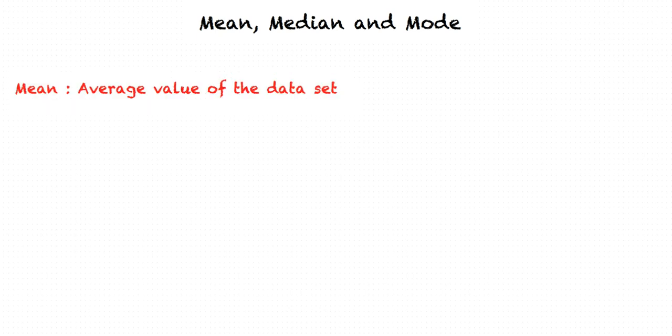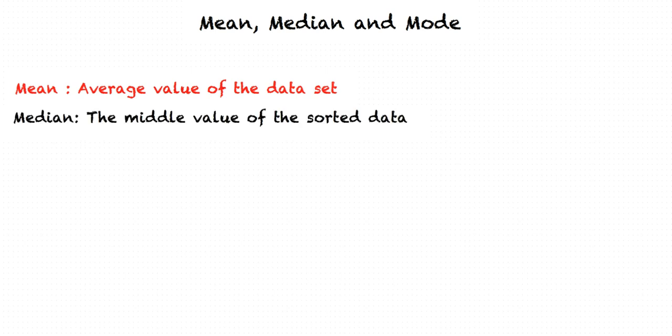The mean of a data set tells us the average value of the data. For example, if we have the heights of 30 boys, the mean would tell us the average height. The median is the middle value of a data set when the values are arranged in ascending or descending order — it tells us the middle value about which the extremes of the data lie. Mode is the most repeated number in the data set.